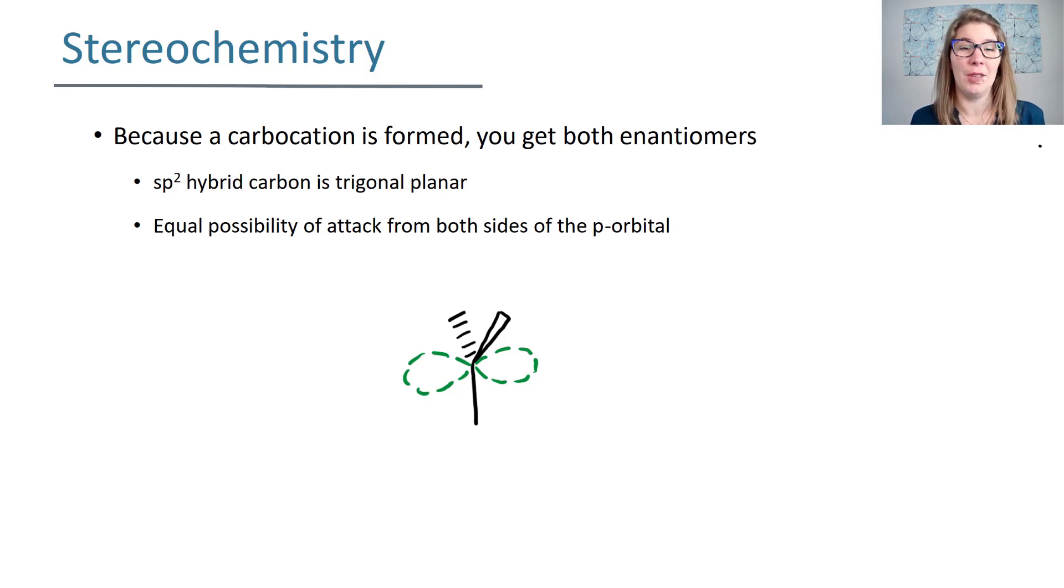Now that we've identified that this is a Markovnikov addition where the OH adds to the more substituted side, let's also look at stereochemistry. So this reaction involves a carbocation intermediate. When we know a reaction involves a carbocation intermediate, what we recognize is that your carbocation is sp2 hybridized. What that means is we have an unhybridized p-orbital where the nucleophile can attack both from this side and also from this side.